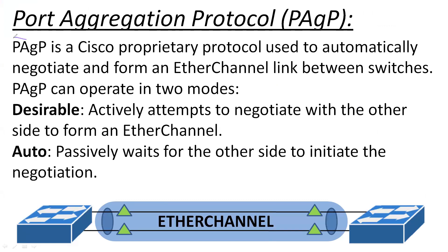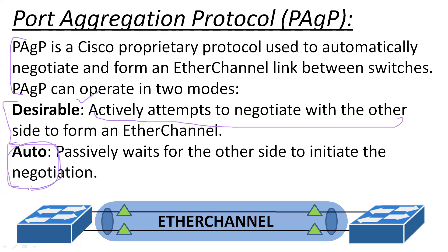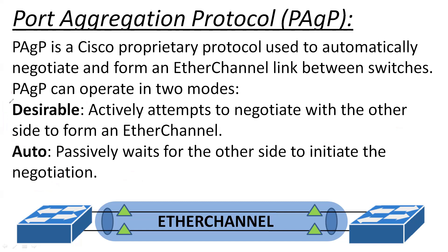Now let's discuss PAgP. PAgP is a Cisco proprietary protocol, while LACP is open standard. In PAgP, 'desirable' mode actively attempts to negotiate with the other side — it initiates the negotiation process. 'Auto' mode waits for the negotiation message from the other side. If both sides are in auto mode, there will be no initiation of the EtherChannel process and no EtherChannel will be formed. We will now create EtherChannel using desirable plus auto.